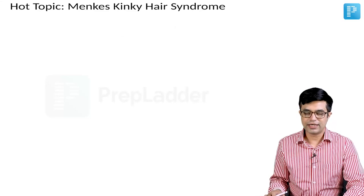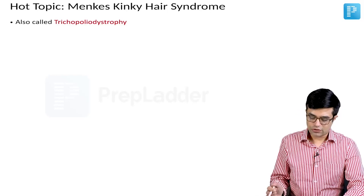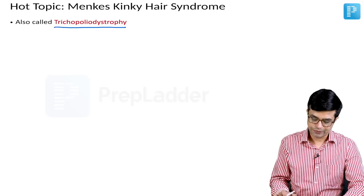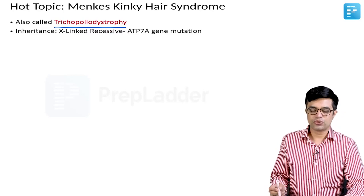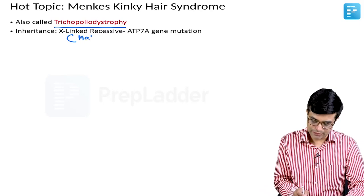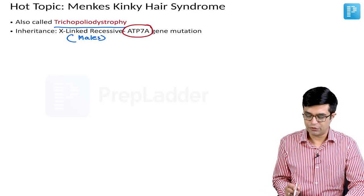The next topic is Menkes Kinky Hair Syndrome, which is an inherited disorder related to copper metabolism. It is also called trichopoliodystrophy, which is the alternative name for this condition. Inheritance-wise it shows X-linked recessive inheritance. It is significantly more common in males and the gene mutated here is ATP7A gene mutation.